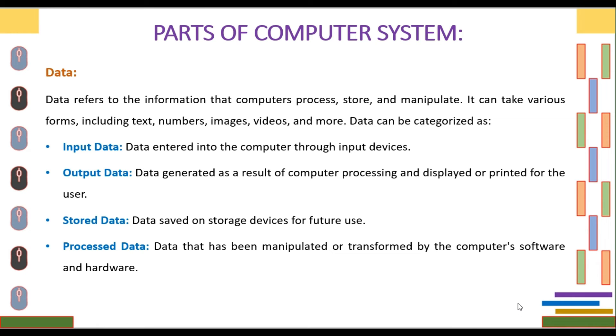Data can be categorized as: Input Data - data entered into the computer through input devices; Output Data - data generated as a result of computer processing and displayed or printed for the user; Stored Data - data saved on storage devices for future use; Processed Data - data that has been manipulated or transformed by the computer's software and hardware.